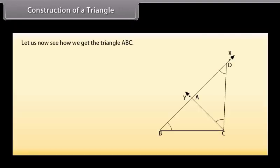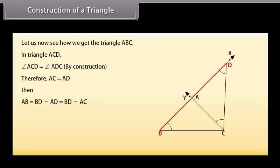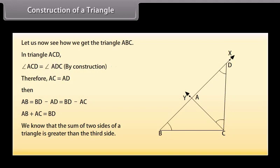Let us now see how we get the triangle ABC. In triangle ACD, angle ACD is equal to angle ADC by construction. Therefore AC is equal to AD. Then AB equals BD minus AD, which equals BD minus AC, so AB plus AC equals BD. We know that the sum of two sides of a triangle is greater than the third side. Therefore ABC is a triangle.